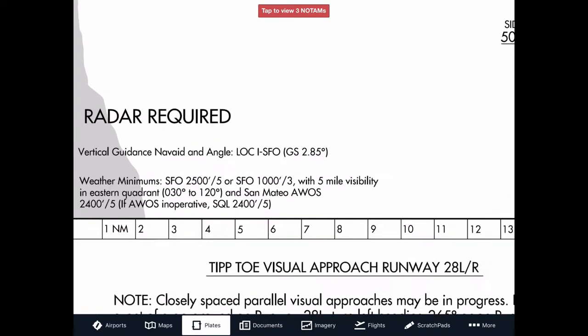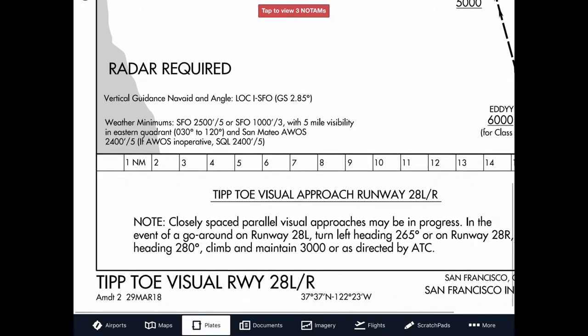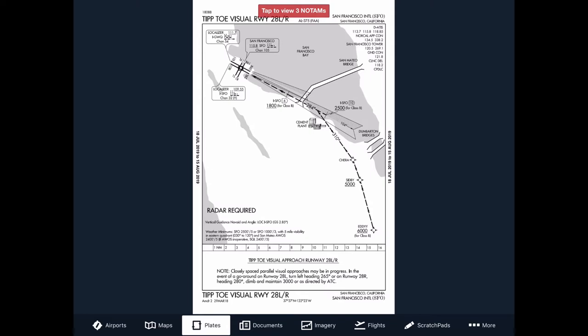For weather minimums: San Francisco needs to report 2,500 feet and 5 miles visibility, or San Francisco can report 1,000-foot ceilings and 3 miles visibility with 5 miles visibility in the eastern quadrant (030 to 120 degrees). The San Mateo AWOS needs to report 2,400 feet and 5 miles; if inoperative, you can use the SQL airport with 2,400 feet and 5 miles visibility. Also brief the missed approach on charted visuals — this one has one: on Runway 28L go-around, turn left heading 265; on 28R heading 280; climb and maintain 3,000 or as directed.